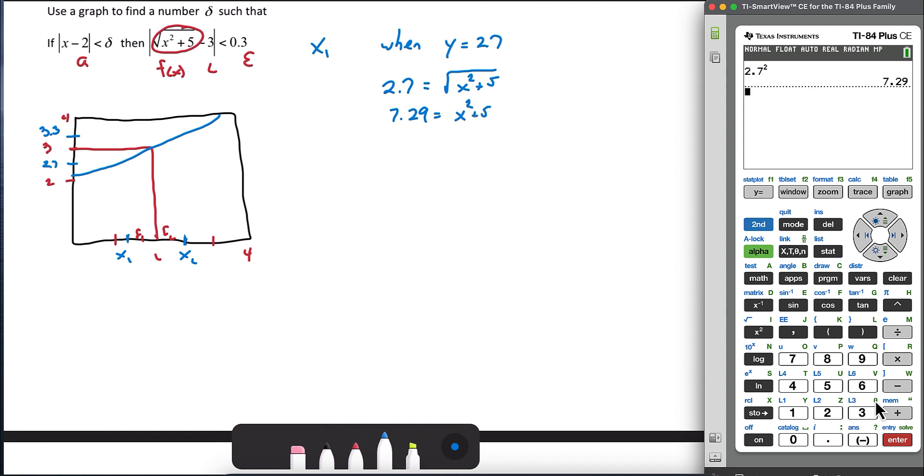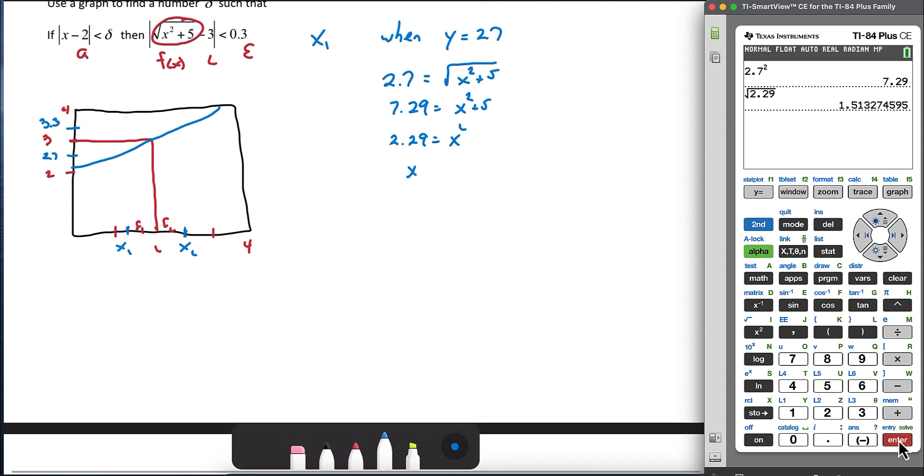So we need to square both sides. 2.7 squared is 7.29. Then we'll subtract 5 to get 2.29. And then we want to take the square root of 2.29. And that's going to give us roughly 1.51. And I'm going to store this value in the calculator. To do that, we'll go to store. And we can store it in any letter. I'll just choose alpha A. So alpha A, enter. And now that value is stored in alpha A so that we can recall it later when we need it.